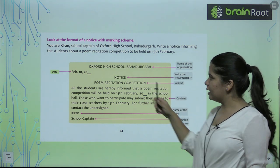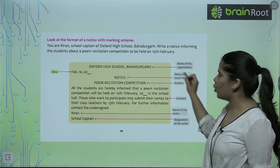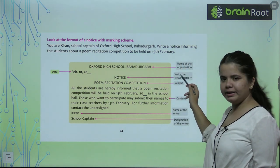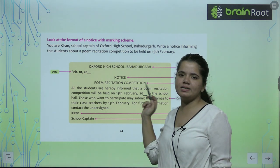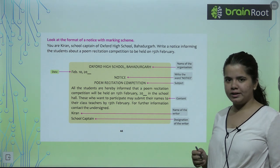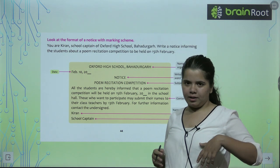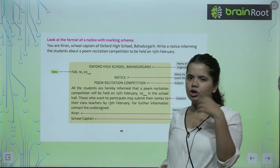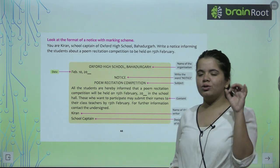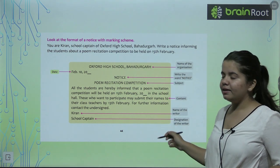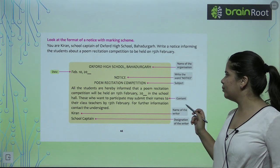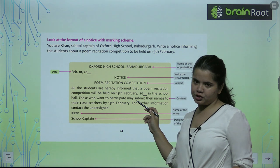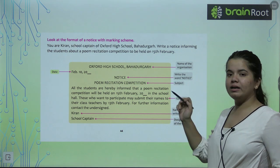Chaliye ab hum iska solution dekhenge. Oxford High School, Bahadurgarh — sabse pehle aapne apni organization ka naam likha, phir aapne date likhi, phir 'NOTICE', write the word NOTICE, aur phir aapne subject likha ki yeh jo notice hai woh kis baare mein hai. Subject likhna bohut important hai — for example, agar aapke paas ek notice hai jo aapko abhi read nahi karna, toh aap sirf subject padh lenye aur aapko thoda bahut idea lag jayega ki yeh notice kis baare mein hai. Now look at the content: 'All the students are hereby informed that a poem recitation competition will be held on 15th February 2024 in the school hall.' Aapko year bhi saath mein mention karna hai.